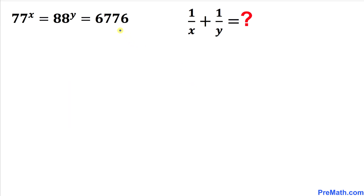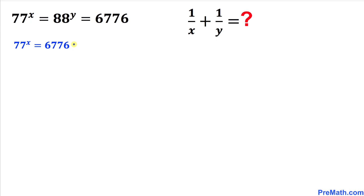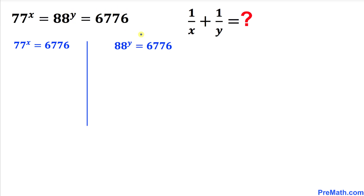The very first thing we are going to do is focus on 77^x and 6776 — we are going to equate them first. Here I wrote them down. Likewise, let's go ahead and equate 88^y and 6776 as well, and here I have copied it down.